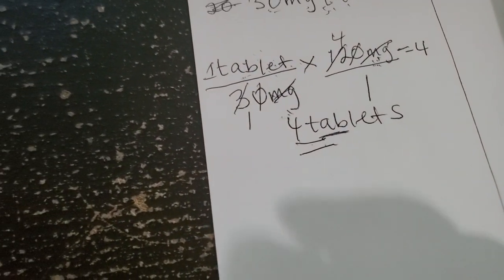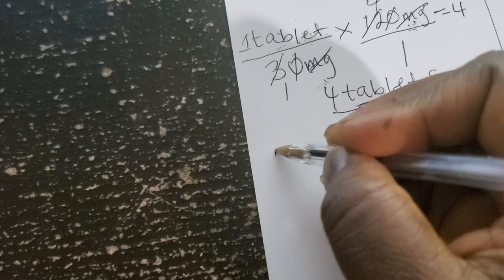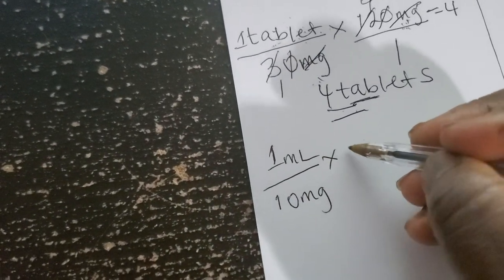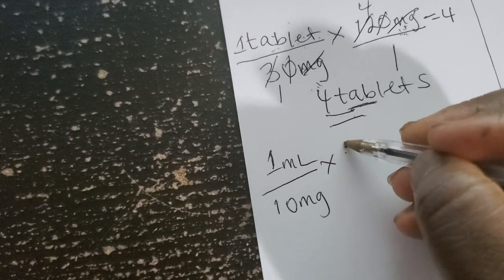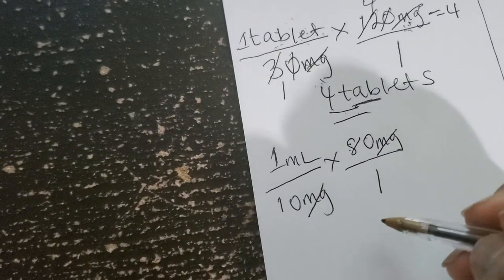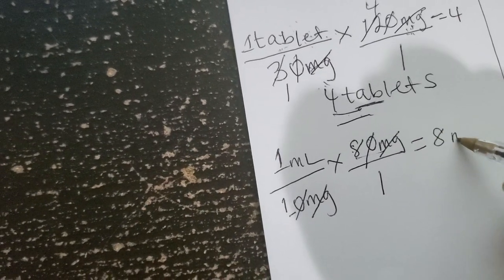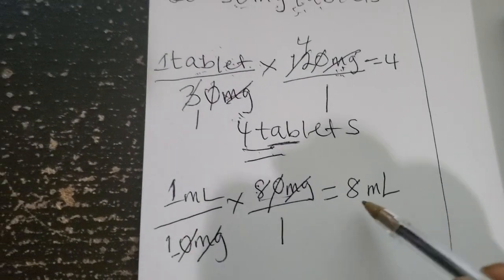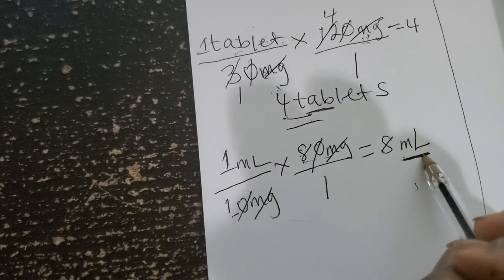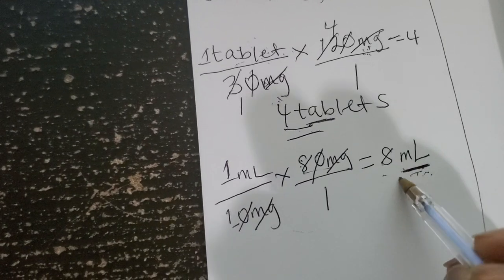Because I'm looking for milliliters, I write that first: one milliliter over 10 mg, multiplied by what the doctor ordered — 80 mg over 1. The milligrams cancel, and 80 divided by 10 gives 8 mL as the final answer. We end up with the unit that is required. It says round to the whole number — it's already a whole number, so no rounding needed.